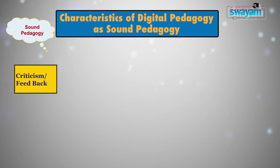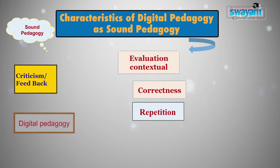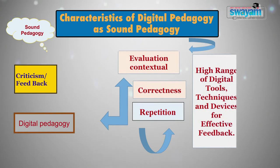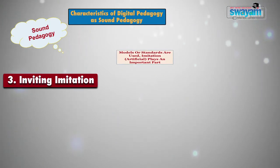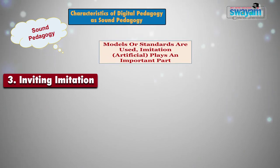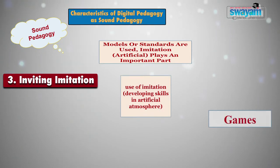Next is criticism as a feedback system — a distinctive feature of sound pedagogy. It has elements of evaluation, correctness, contextual repetition, and target setting. Digital pedagogy integrates a high range of digital tools, techniques, and devices for effective feedback. Next is inviting imitation. Whenever models or standards are used, imitation plays an important part. Skills are best developed through imitation — developing skills in an artificial environment. Imitation is an important moral, social, and intellectual agent.